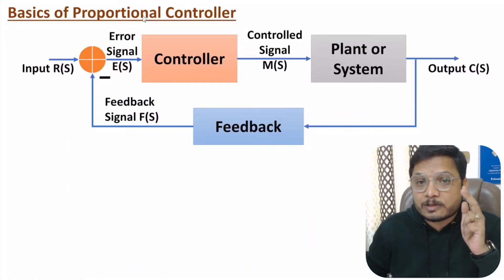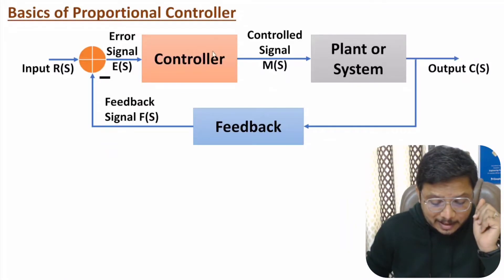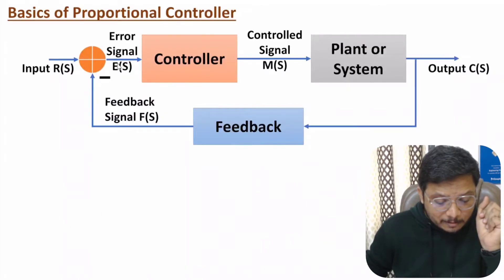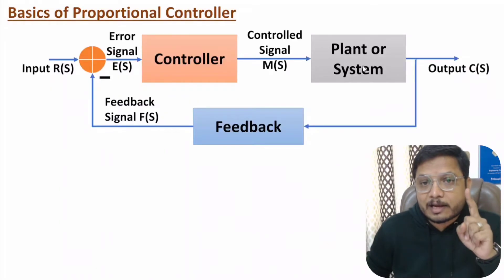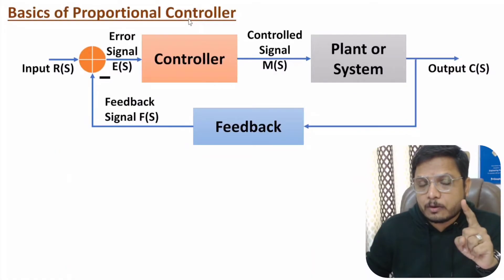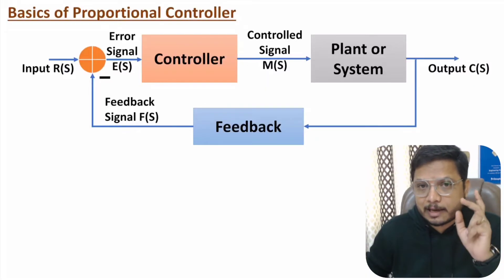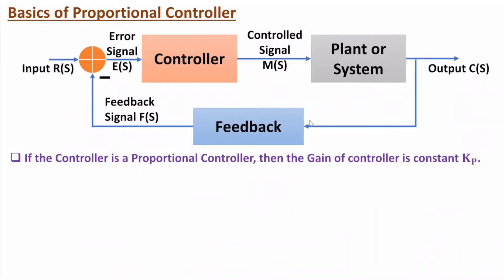Here you can observe a standard control system with negative feedback. With a standard control system, the controller is connected in series with the system. The input to the controller will be the error signal, which is the difference between the input signal and the feedback signal. The controller will generate a controlled signal and that will be given to the system. Here we are talking about a proportional controller, which has a constant gain Kp.